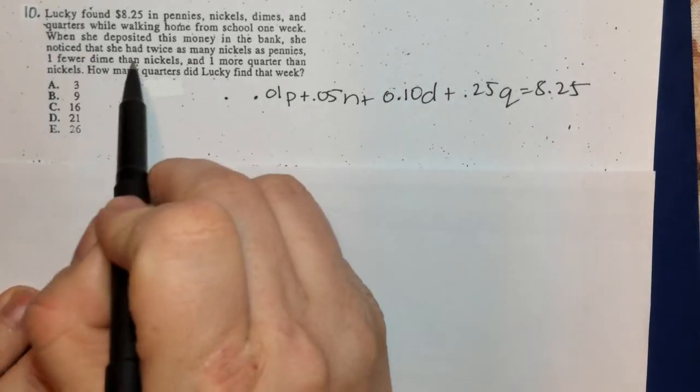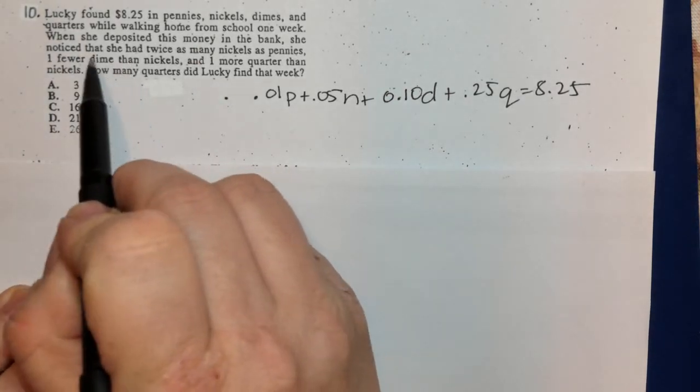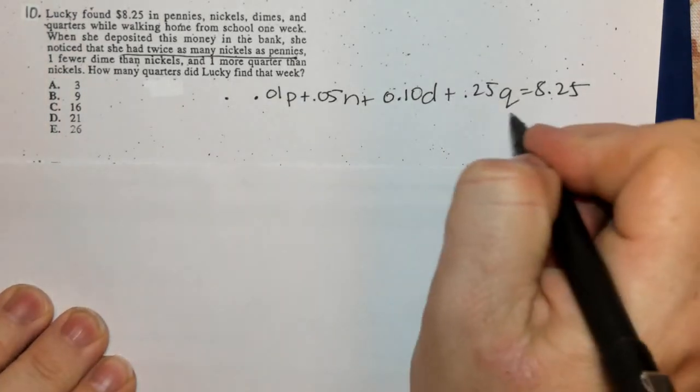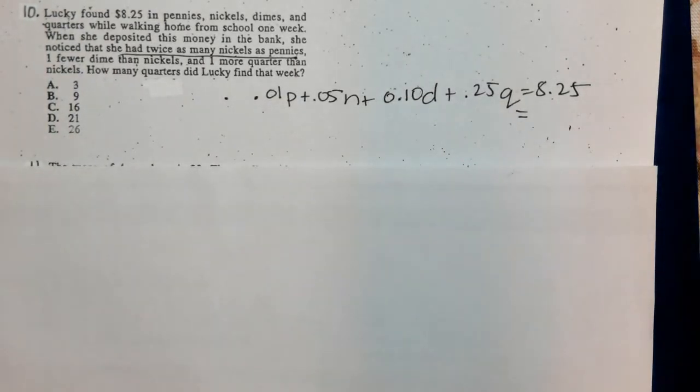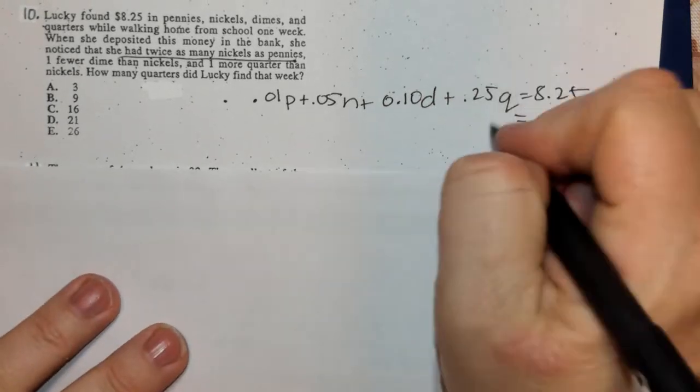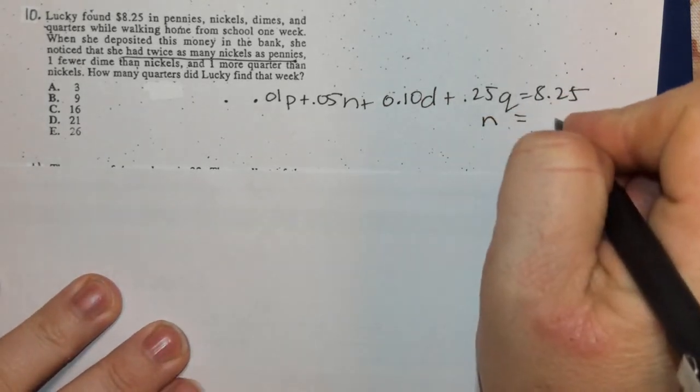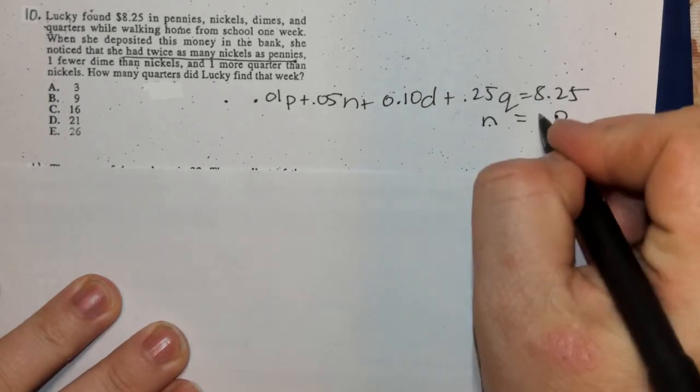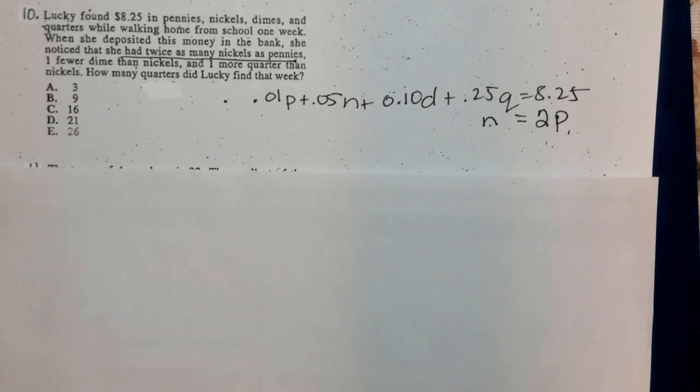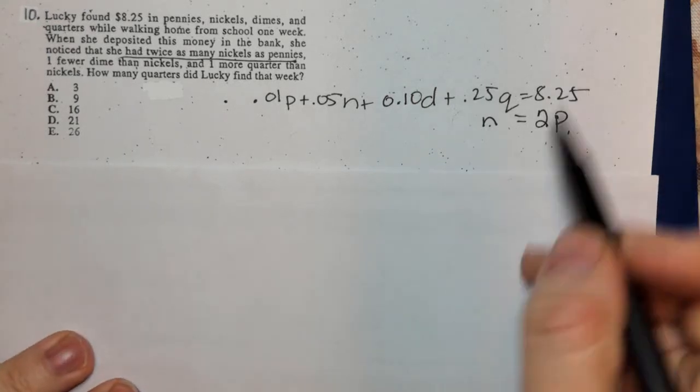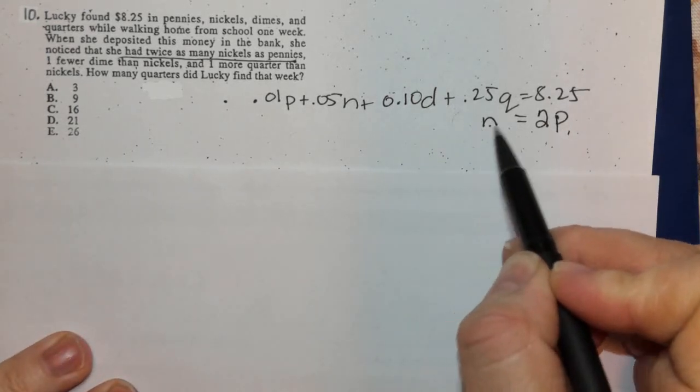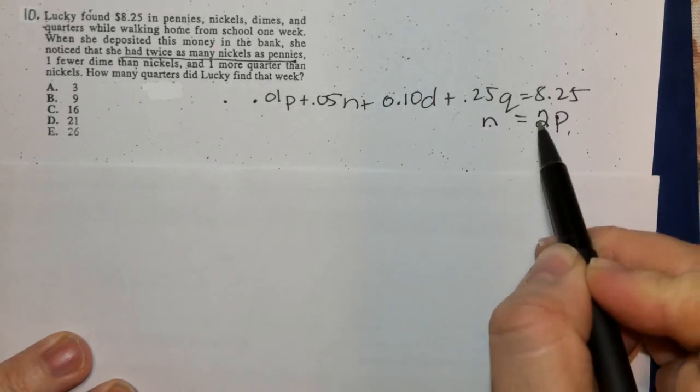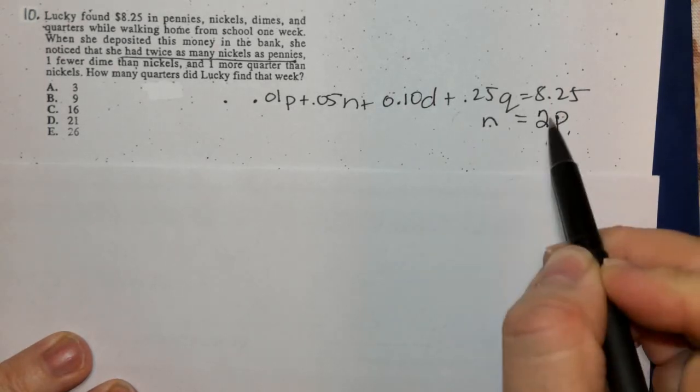She has twice as many nickels as pennies. If the two are going to be equal, we need to double the pennies: 2P = N. For instance, if she had 10 nickels, then she only had 5 pennies. When I take the pennies times 2, now I have the same amount of coins.